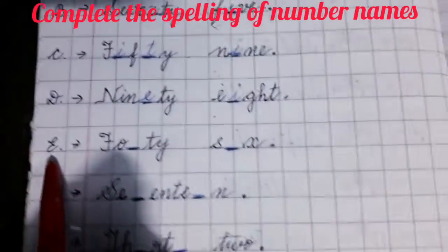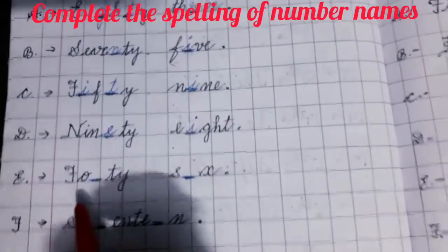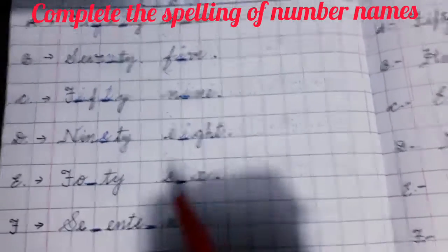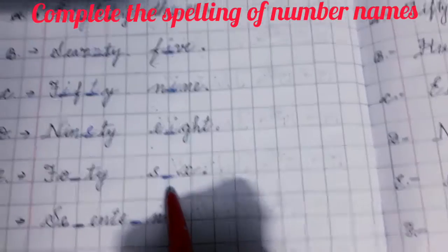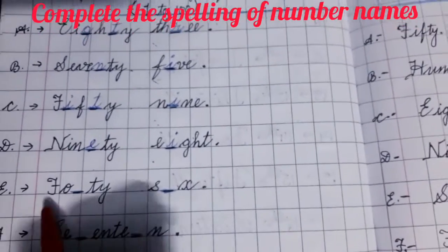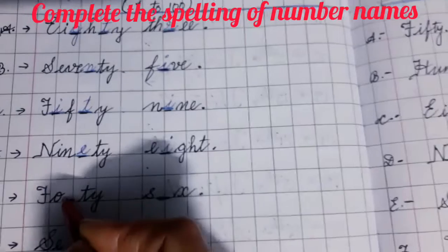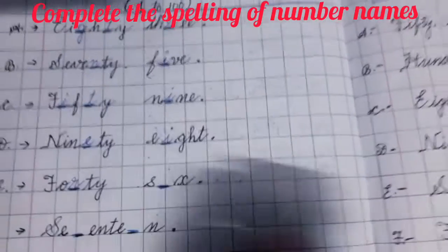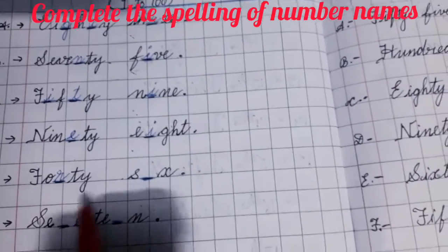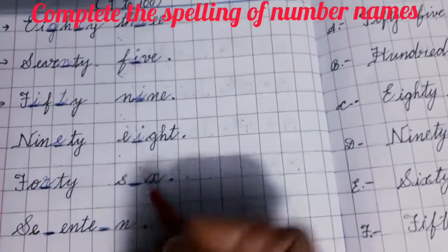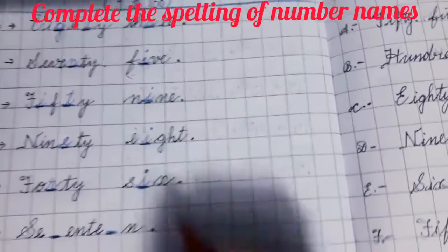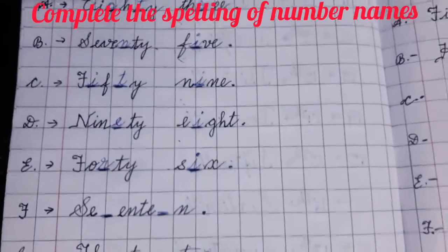Come to the next. This is E, put an arrow. Write F O blank space T Y — then leave a block — then write S blank space X. After F O, what you will fill here? You will fill in R. So T Y is written — this is the spelling of 40 — FORTY. And the next spelling is of 6 — SIX — so you will fill in I. 46 — FORTY SIX.